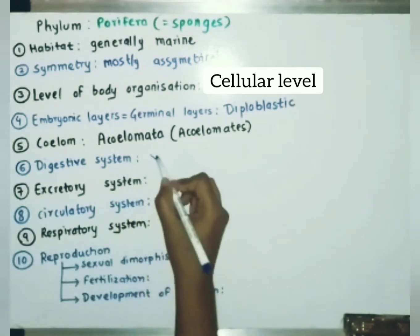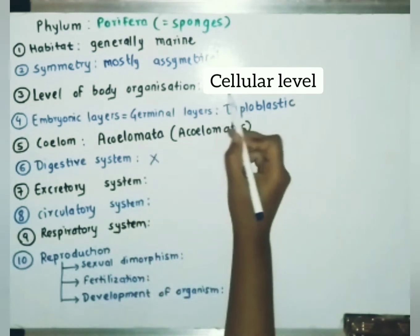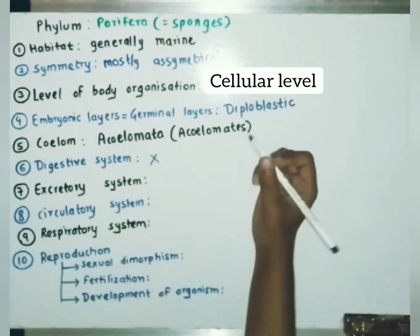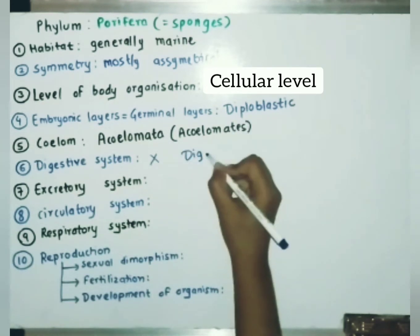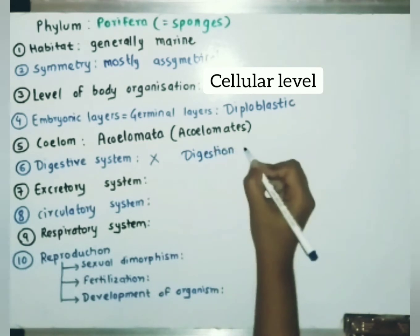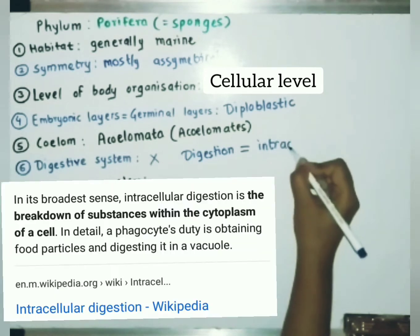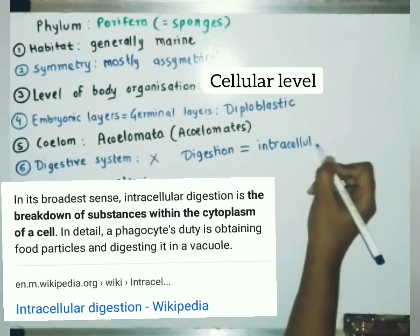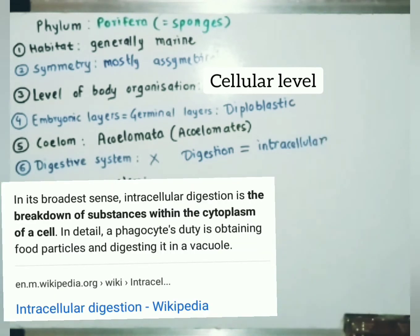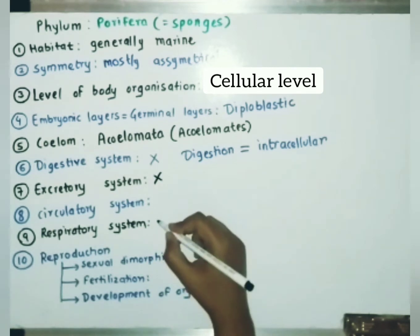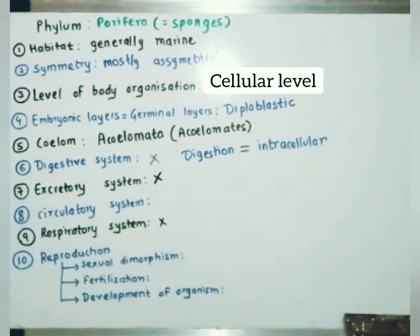Digestive system is absent in Porifera as they exhibit cellular level of body organization. Digestion is intracellular — intracellular digestion means the breakdown of substances within the cytoplasm of the cell. Porifera also have no excretory system, no respiratory system, and no circulatory system.